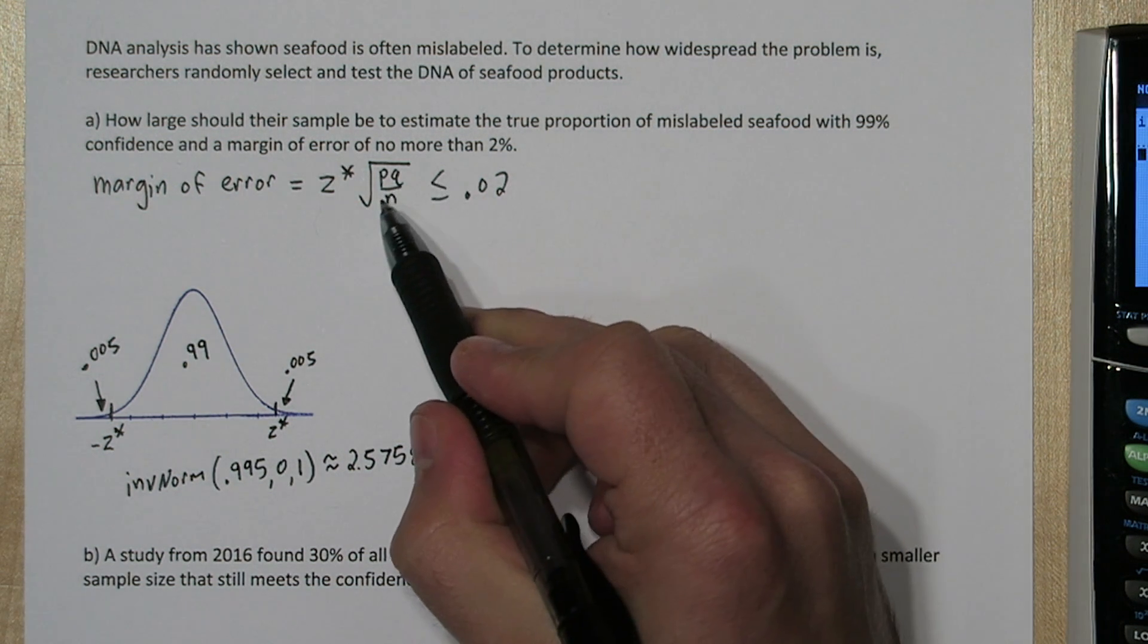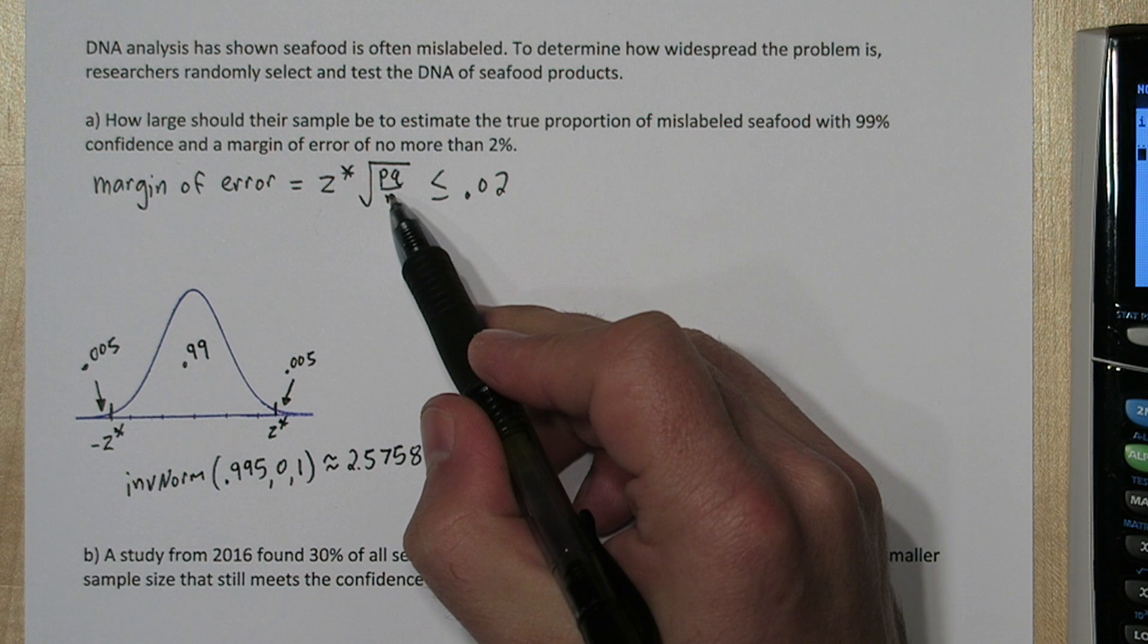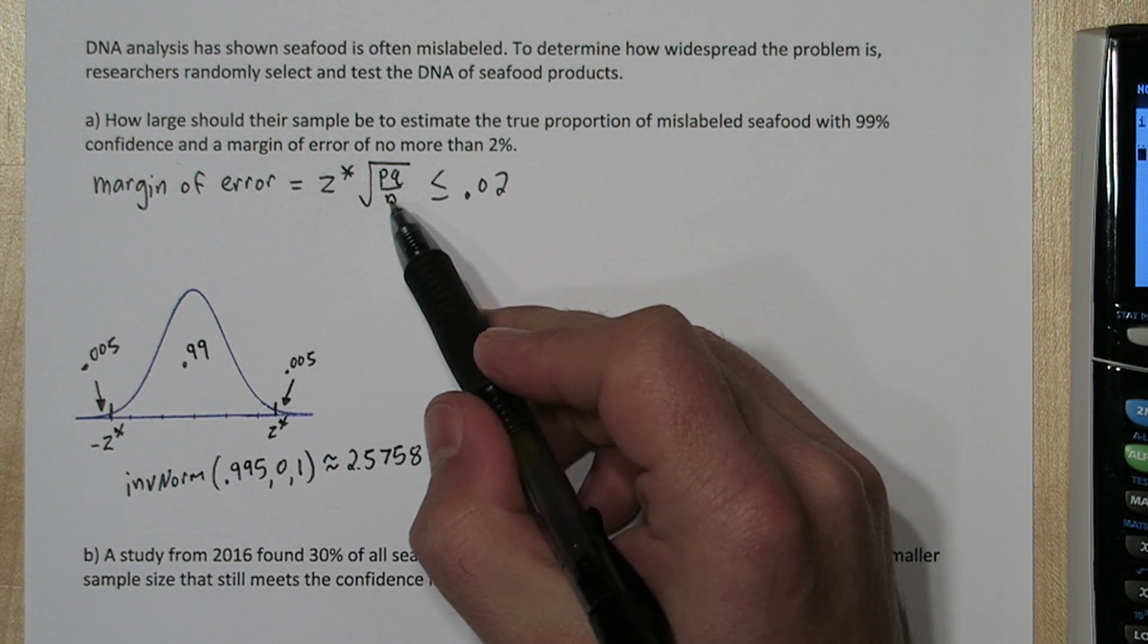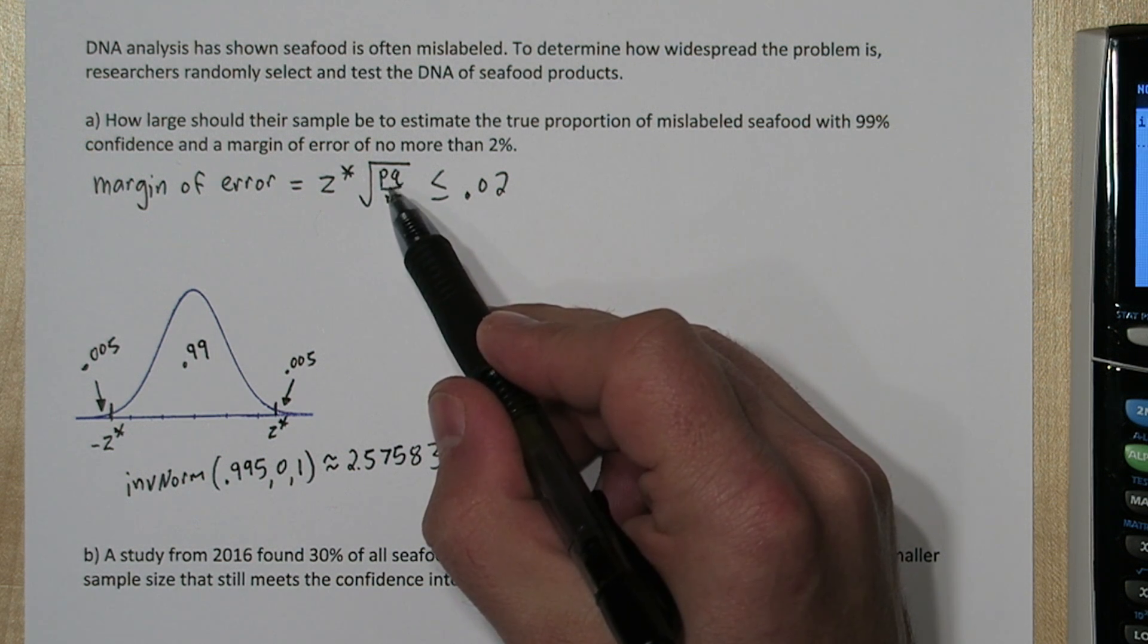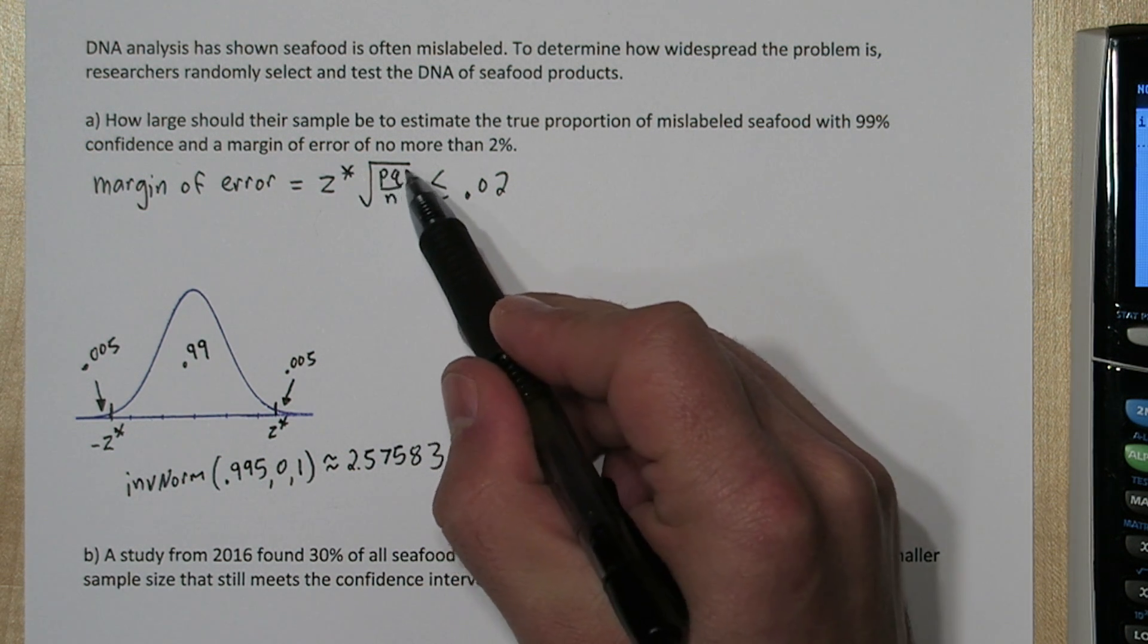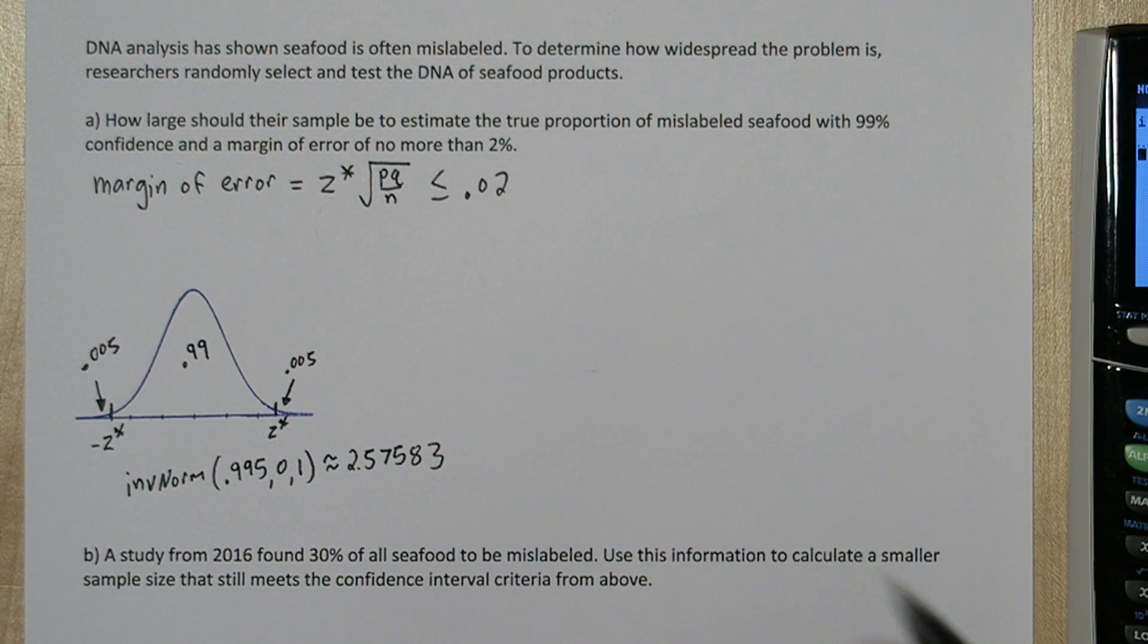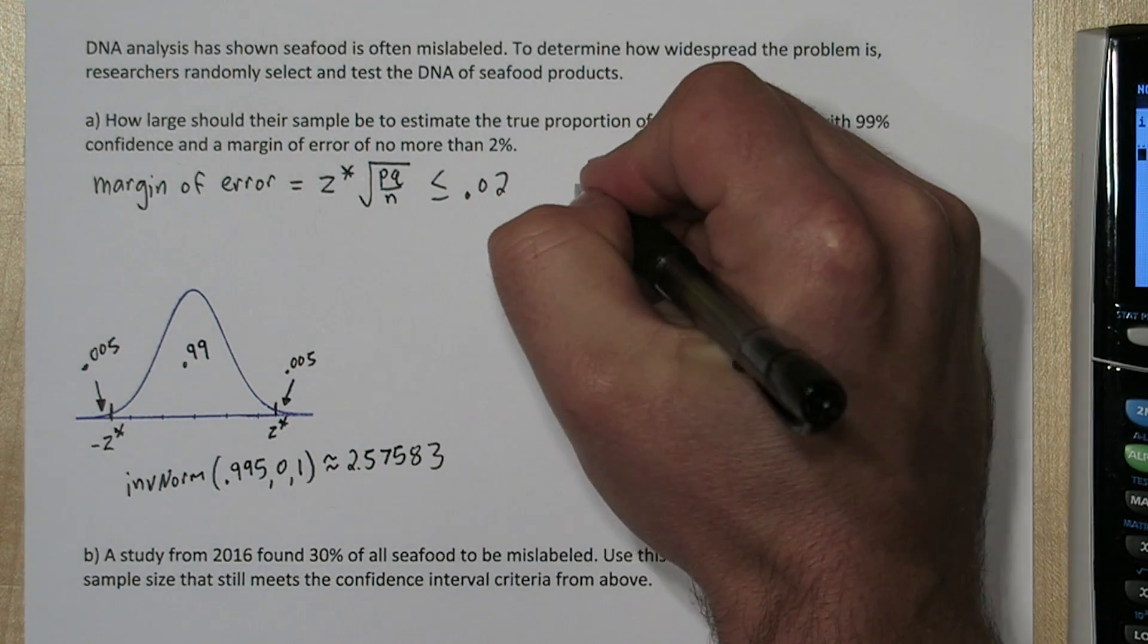Now, the other thing we need is p, and we don't know p. The worst case scenario is that the true proportion of mislabeled food is 50%. That would maximize the denominator here and maximize our sample size required. So let's assume the worst case scenario.